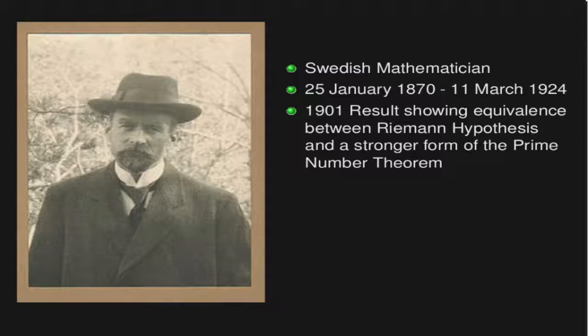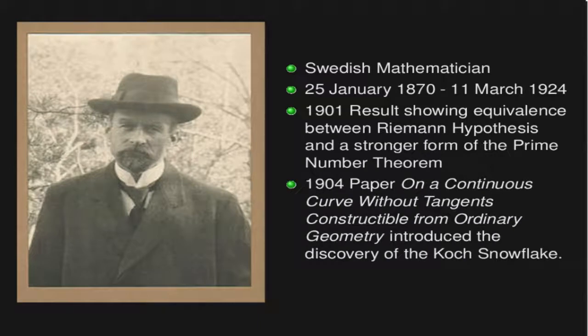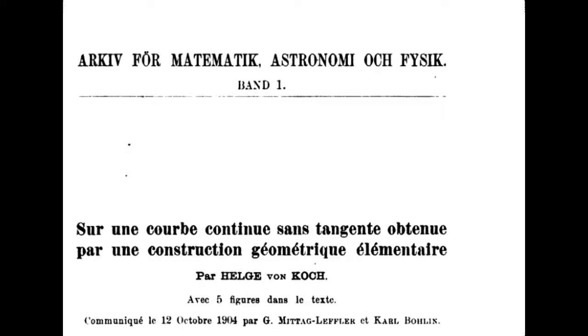Enter Niels Helge von Koch. Now Koch was a Swedish mathematician. He was born in 1870 and died in 1924. One of his theorems on number theory that he proved in 1901 made the connection between the Riemann hypothesis and a stronger form of the prime number theorem. Now that's one of the things that he's known for, but probably where you've heard more about him is from a curve that actually bears his name, and that curve is the Koch snowflake.